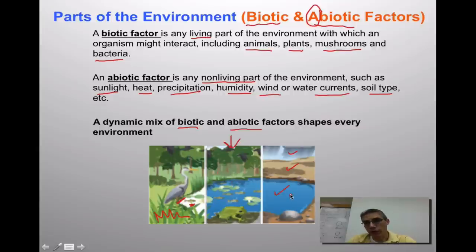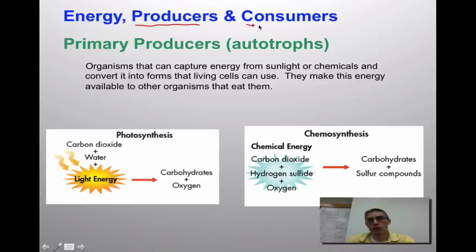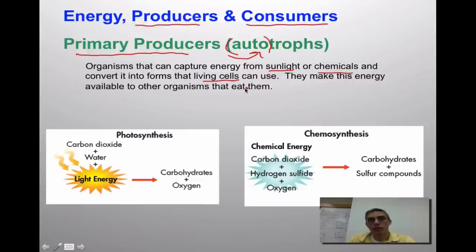Our main focus when talking about any ecological environment is usually the living aspects. You have to identify the differences between two primary groups: producers and consumers. The first group is the primary producers, sometimes called autotrophs — that prefix auto indicates these are organisms that can actually make their own food. They capture energy from sunlight or chemicals, depending on where they live, and convert it into forms that living cells can use. These are considered producers — they make this energy available to other organisms that might eat them.